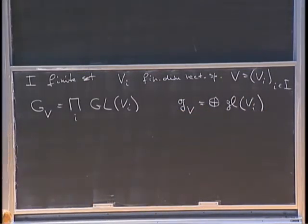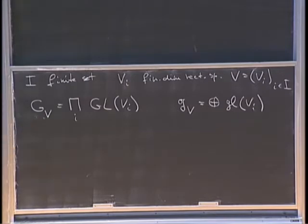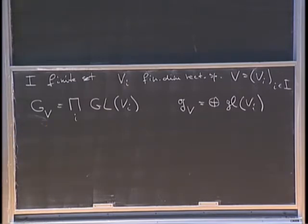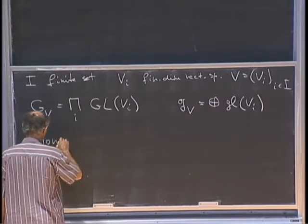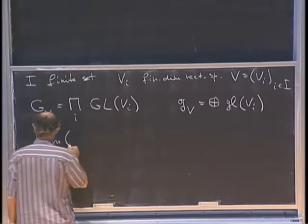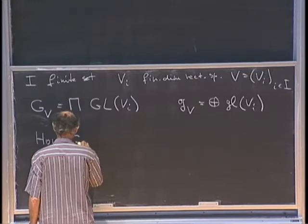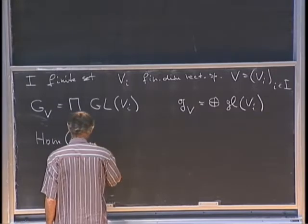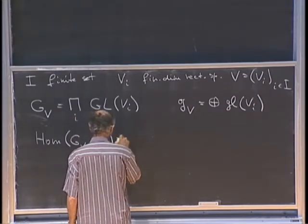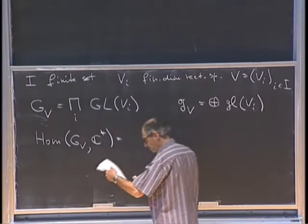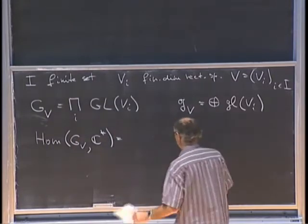We are interested in taking GIT quotients with respect to this group G sub V. So we look at the characters chi for this group. All possible characters are homomorphisms from G sub V to C-star.